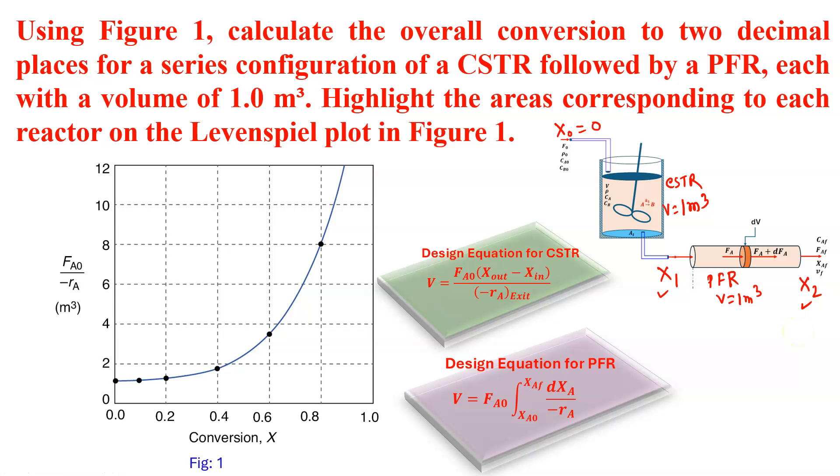In the Levenspiel plot, FA0 minus RA versus X is given. From this plot, we have to find out what will be X1 and what will be X2. Here, design equation for CSTR is V equals FA0, X out minus X in by minus RA exit. Volume is given, and X in is 0. X out we have to find out, and X out is nothing but X1.